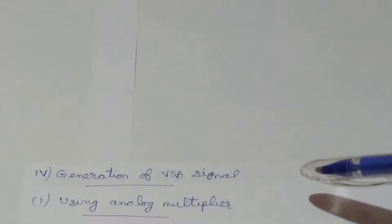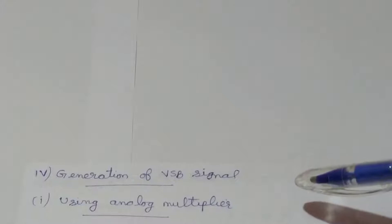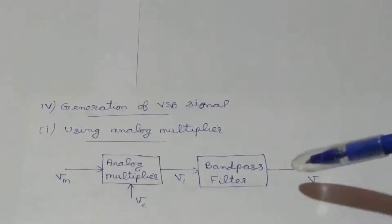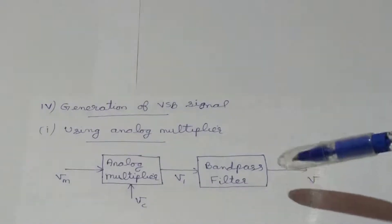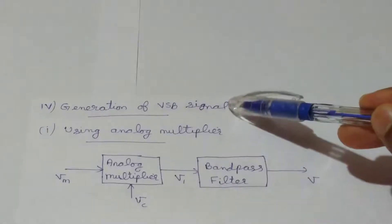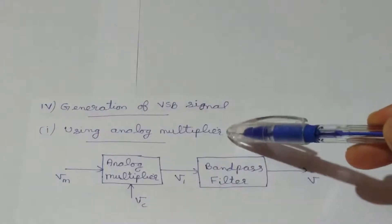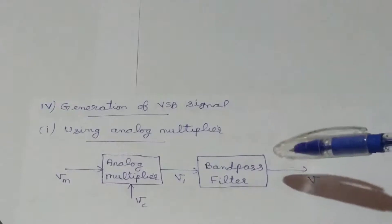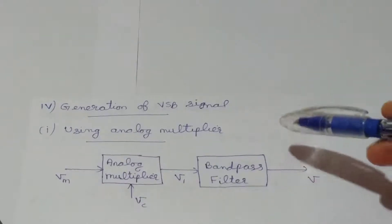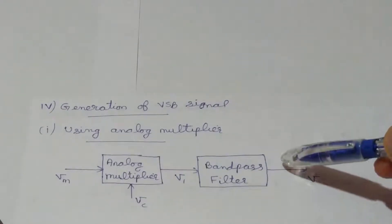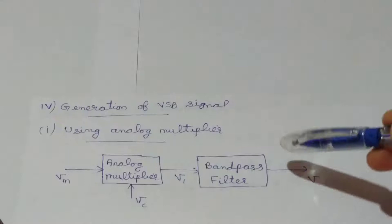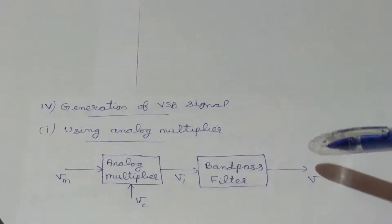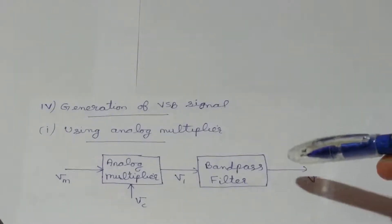Let's first consider the case of generation of VSB signal by using an analog multiplier. This is the block diagram for the generation of VSB signal by using analog multiplier method. The basic blocks remain the same as in the case of single sideband generation, and the only difference is in the cutoff frequency values of the bandpass filter.